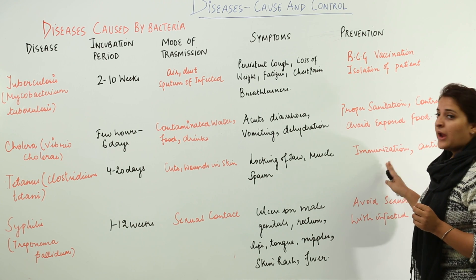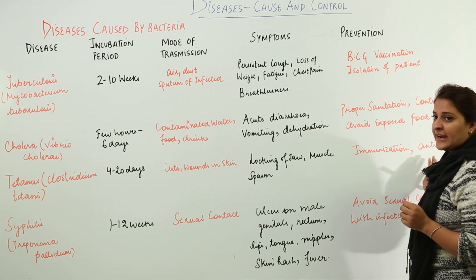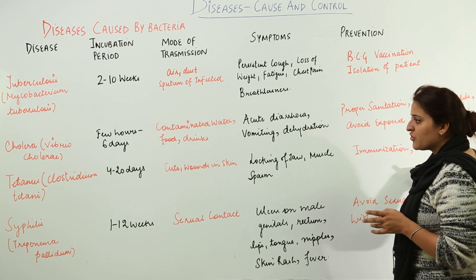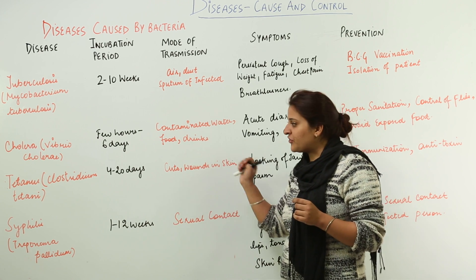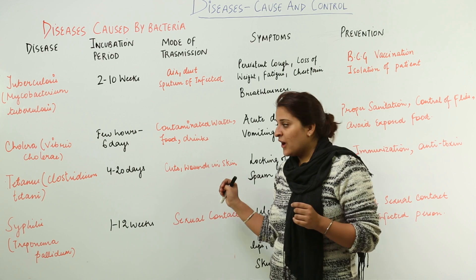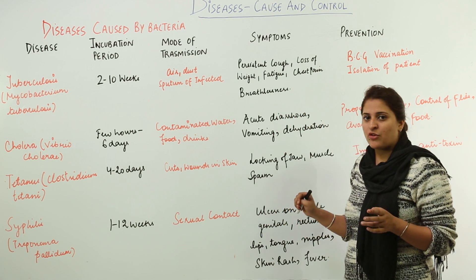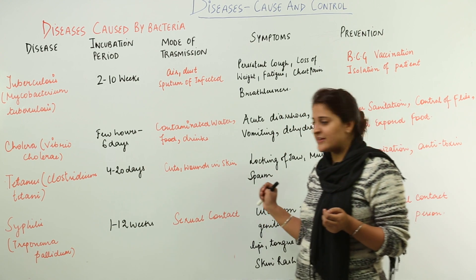The preventive measures for tetanus include immunization and intake of antitoxins, which can prevent the spread of Clostridium tetani, the bacterium resulting in the disease known as tetanus.